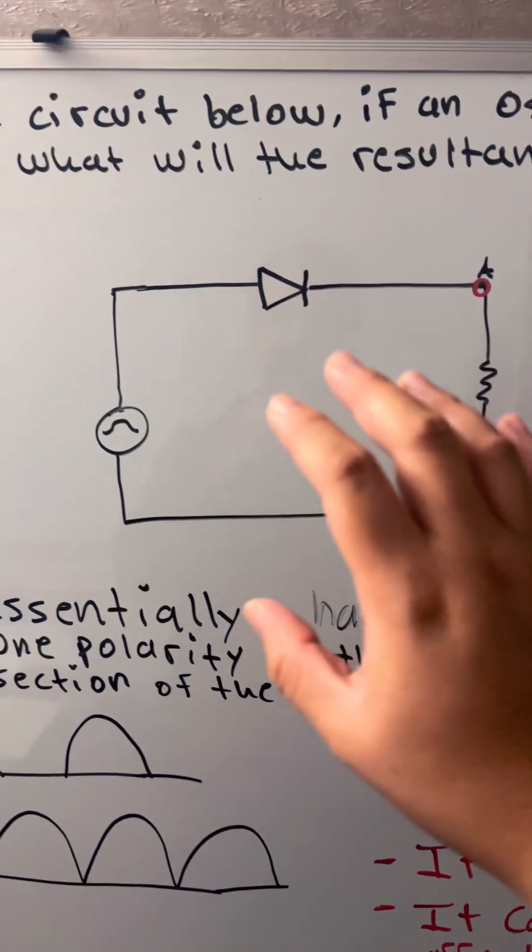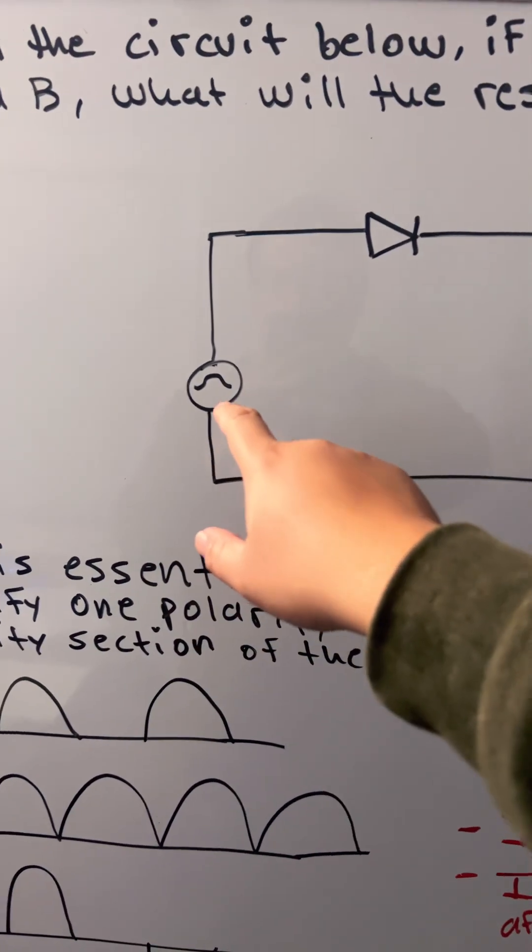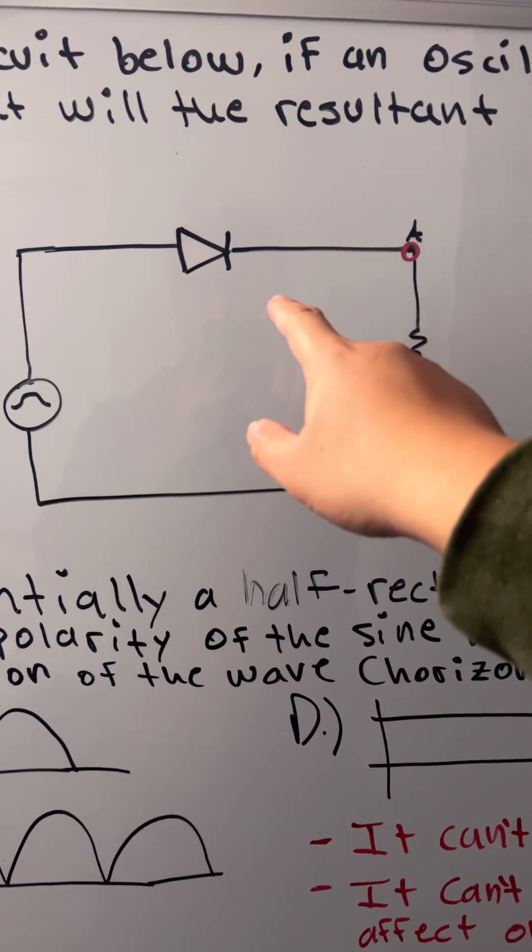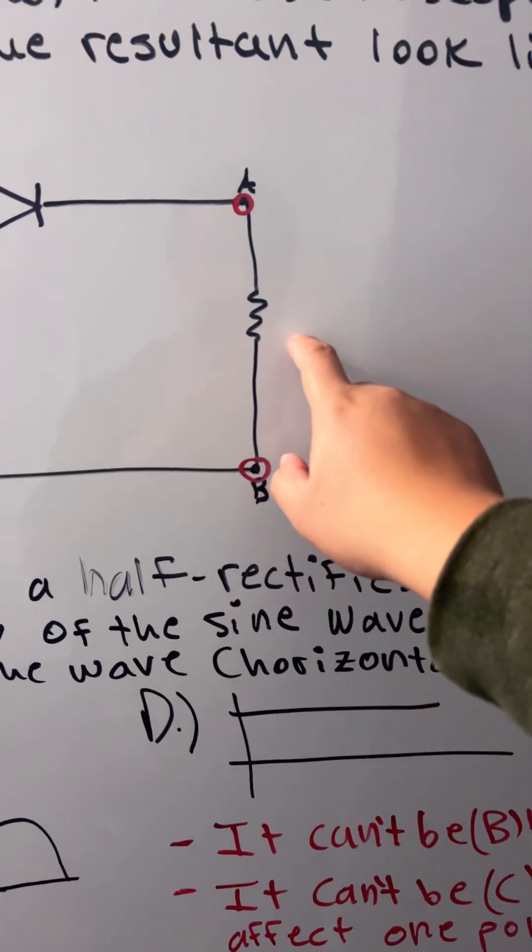So we have the source, we have the diode, and then we have points A and B in the resistor.